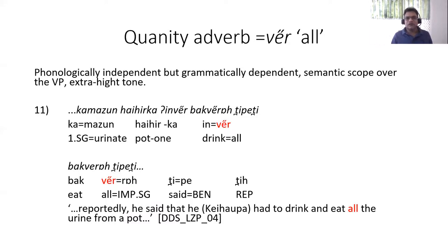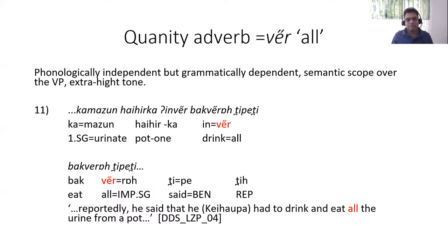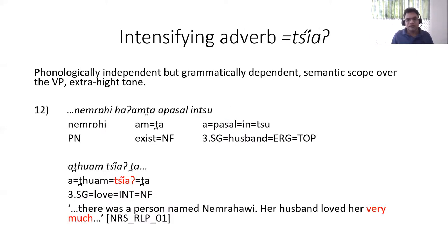Now the quantity adverb ver — I transcribed it with an extra high tone, which I did not do for other words. I had to transcribe tone for ver because it was so apparent and seemed to interact closely with pragmatic functions. Another reason I didn't transcribe tone elsewhere is that Pankwa speakers were never consistent in giving tones. But for ver, there was no doubt it had extra high tone. Ver is also phonologically independent but grammatically dependent, and has a semantic scope over the verb phrase. Similarly, the intensifying adverb also shares these properties.